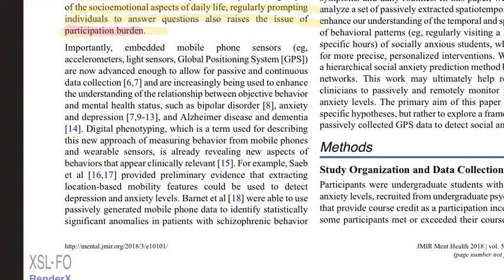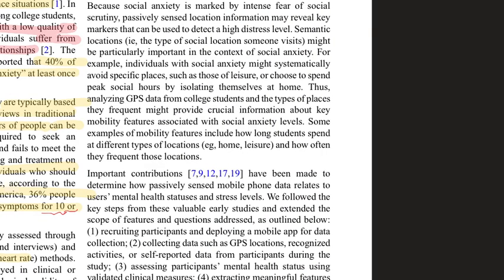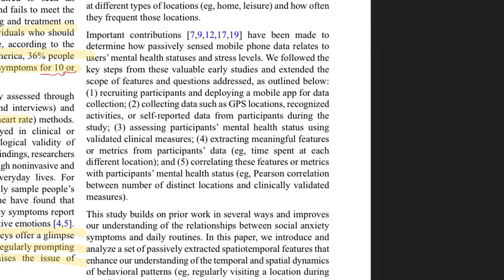GPS traces are used for many mental health tasks such as predicting bipolar disorder, anxiety, depression, Alzheimer's disease, and dementia. References provide evidence that location-based features can assess depression and anxiety levels. These evidences, along with social anxiety being marked by intense fear of social scrutiny, make it plausible that passively sensed location information may reveal key markers to detect high distress and social anxiety levels.